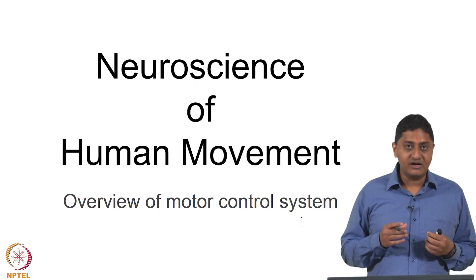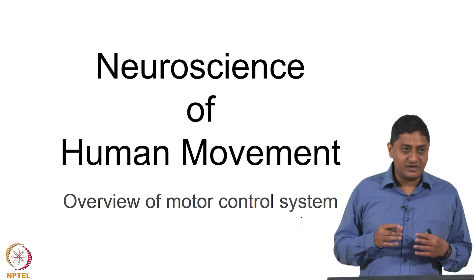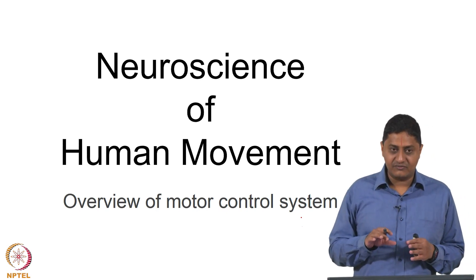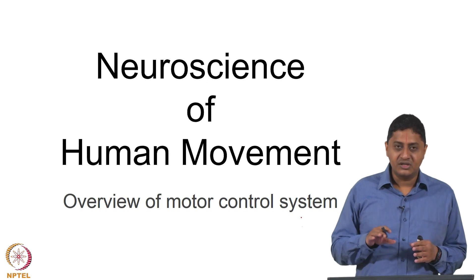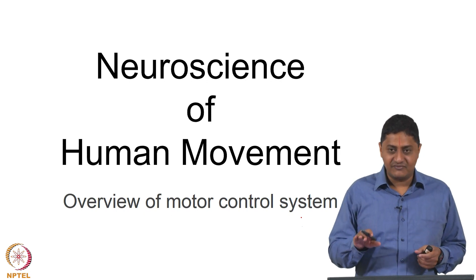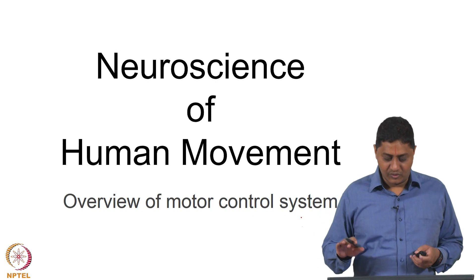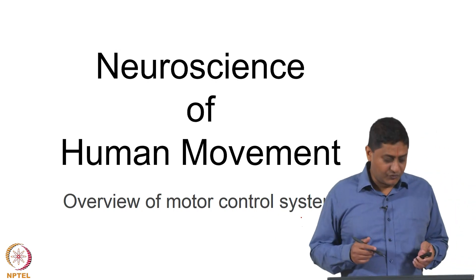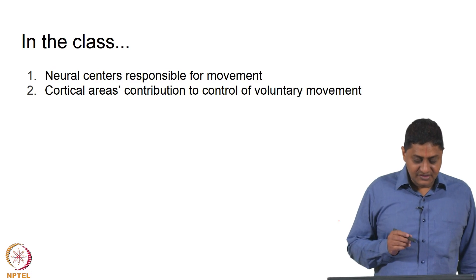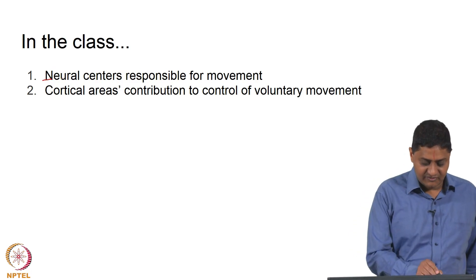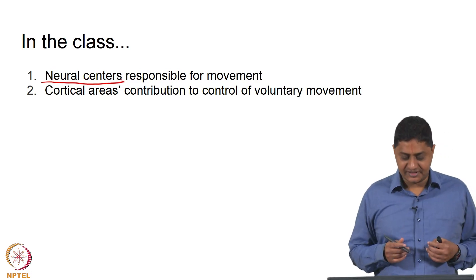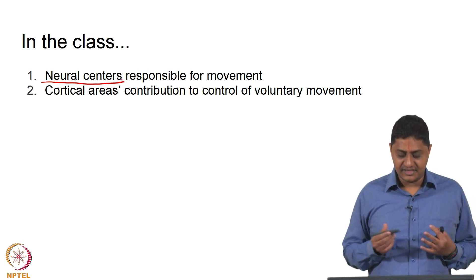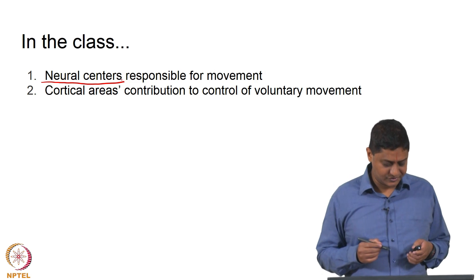We get a better idea of where we are and our position, because we are at a crucial stage — we have come about 30 to 40 percent through the syllabus and need to move forward. In today's class we will talk about the neural centers responsible for movements and the contribution of cortical areas to voluntary movement control.